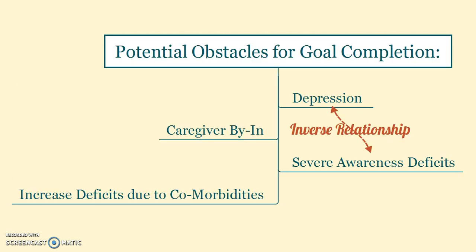Some potential obstacles to goal completion include caregiver buy-in, given that Frank and his wife may have unrealistic views of what they expect him to return to. Additionally, increased deficits due to comorbidities — he has diabetes and coronary artery disease. Also, depression and awareness deficits have an inverse relationship, so as his awareness becomes more intact, his depression may increase. If he lacks awareness, he won't be depressed but also won't recognize his deficits.